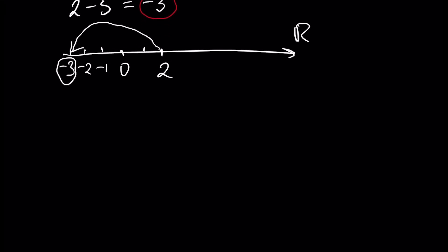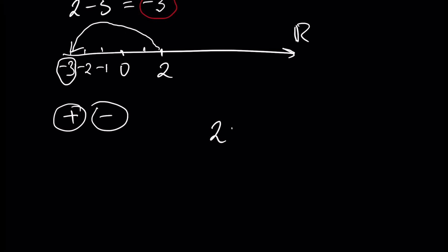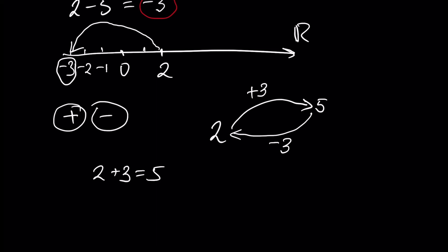It's important to understand that addition and subtraction are opposite operations. For example, starting at 2 and adding 3 gives 5. The opposite operation is subtraction: 5 minus 3 returns us to the initial point, which is 2. So plus and minus are opposite operations. Similarly, multiplication and division are also opposite operations to each other.